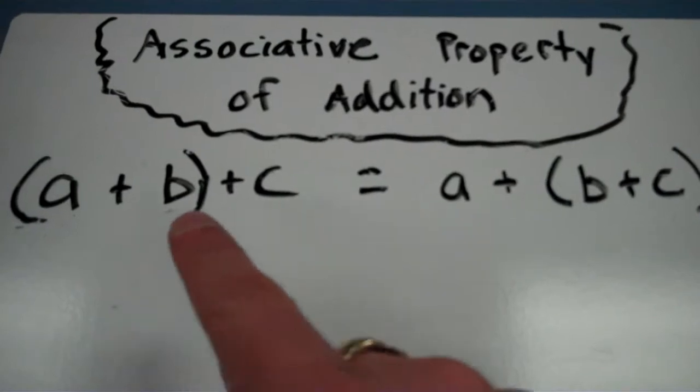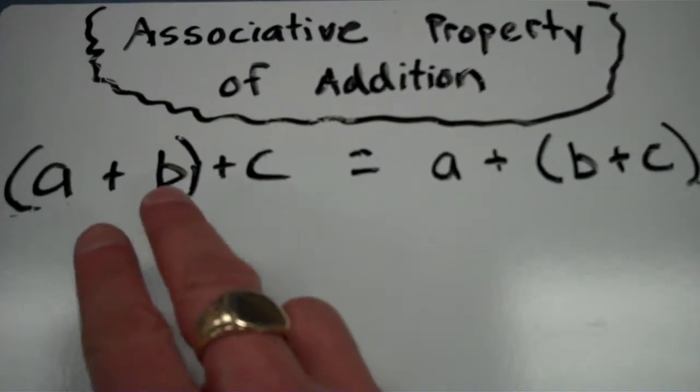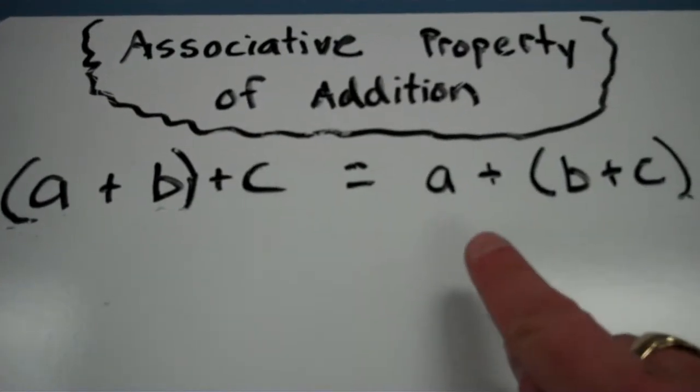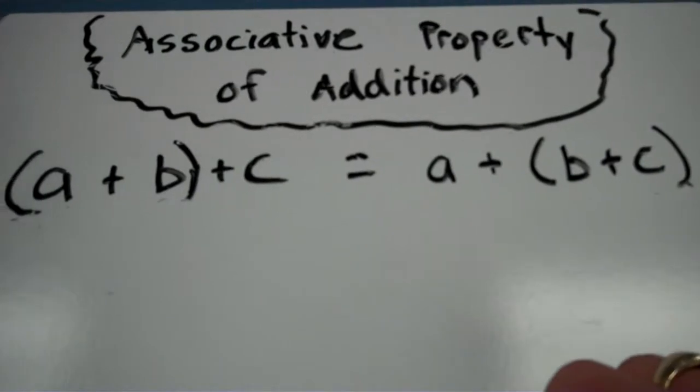So for example, I have a plus b plus c, but I'm grouping a and b together first, and then adding c. Here I have a plus b plus c, but I'm grouping b and c together, which I then add to a.